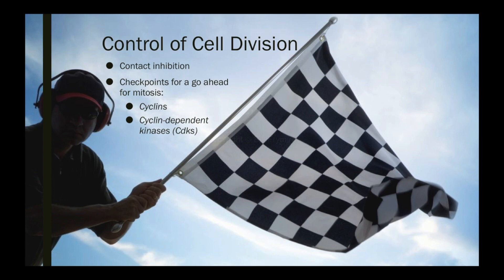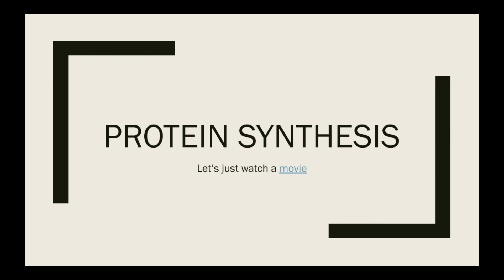Contact inhibition is similar to inviting your friends onto a crowded bus — if you're shoulder to shoulder with people, you're not going to invite more. The bus is full, just stay still. Another thought is that cells are susceptible to release of proteins and enzymes that tell them to divide — like someone waving a flag to go. The checkpoints for go-ahead for mitosis are cyclins and cyclin-dependent kinases, which act as signalers.